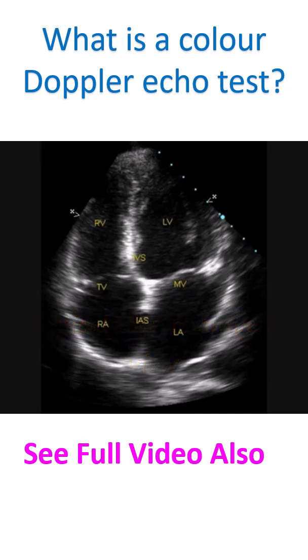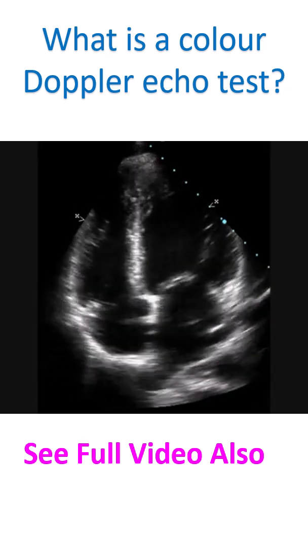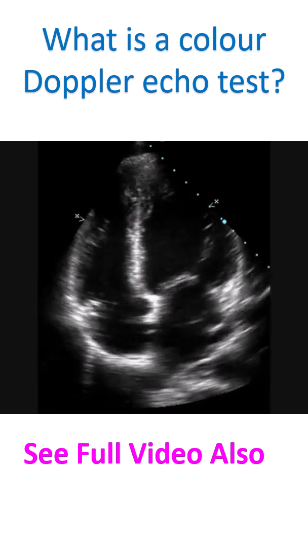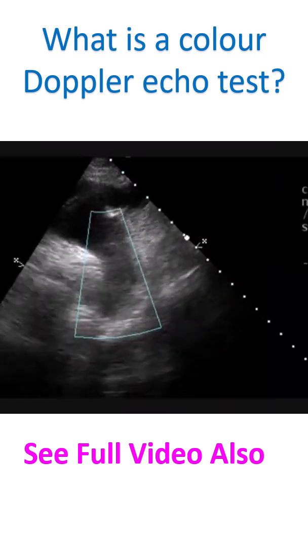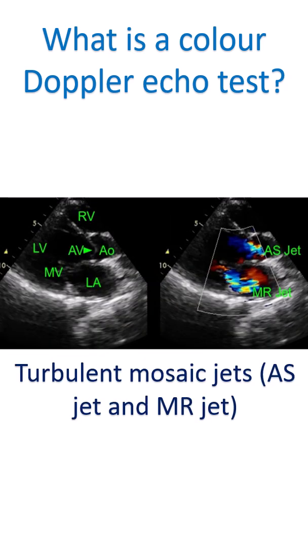In Doppler echocardiography, the target is moving blood vessels. Color Doppler echocardiography receives the ultrasound signals reflected from moving red blood cells in the heart. Ultrasound signals are emitted and received by the ultrasound probe used for echocardiography.